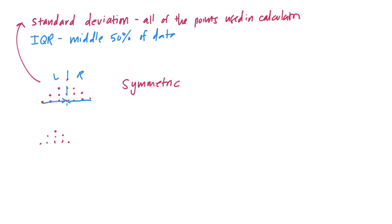Say I've got a skewed distribution — I've got data all the way over here. This is what we call skewed. I cut it in half, and the left side does not look like the right-hand side. Because I've got one point, or a couple of points, that are so far away from the middle, and I'm using all of the points in this calculation, it's going to show that most of the data is more spread out than it actually is. Standard deviation isn't going to be appropriate for this because it's going to show me that the points are more spread out than they actually are. In this example, I only have one point that's not consistent with the other points.